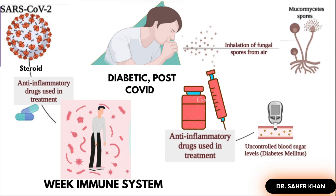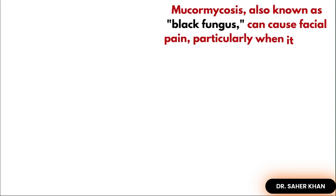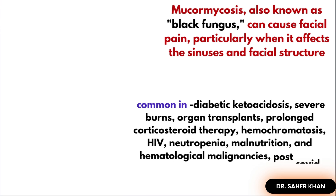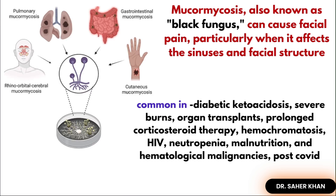This immune suppression leads to fungal overgrowth, and one of the most dangerous fungi in such cases is Mucor, also known as black fungus, responsible for mucormycosis. This fungus is very common in weak immune systems, especially in diabetes with ketoacidosis or post-COVID steroid use. It enters through the nose and can spread to sinuses, blood vessels, and the brain. The patient's facial and teeth pain suggests involvement of the nasal area and sinuses — rhino-orbital-cerebral mucormycosis.